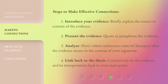Steps to make effective connections: 1. Introduce your evidence — briefly explain the source or context of the evidence. 2. Present the evidence — quote or paraphrase the evidence. 3. Analyze — here's where inferences come in; interpret what the evidence means in the context of your argument. 4. Link back to the thesis — conclusively tie the evidence and its interpretation back to your main point.